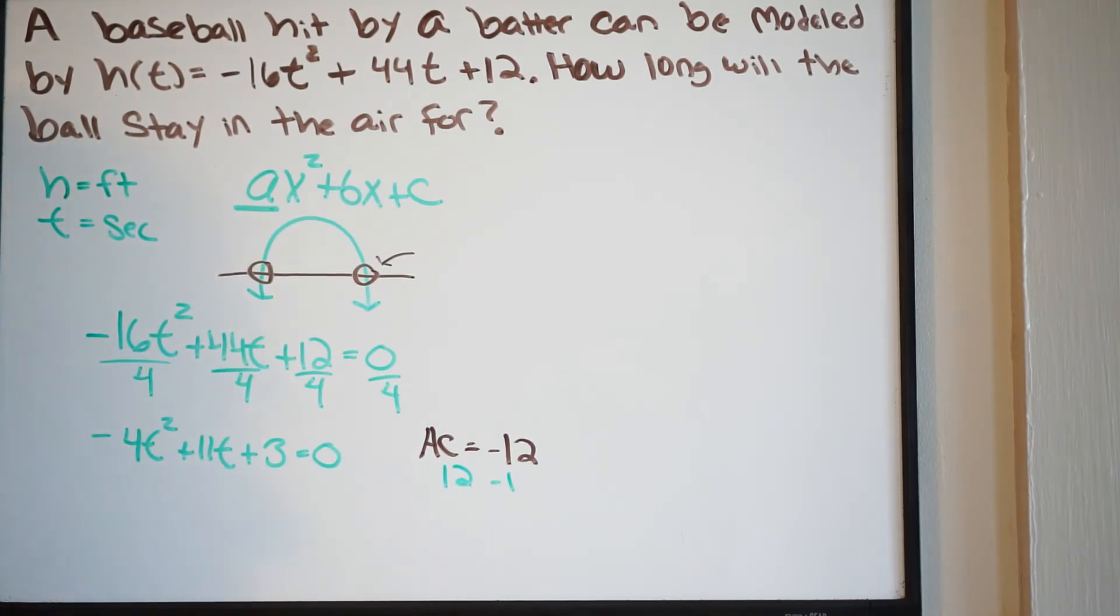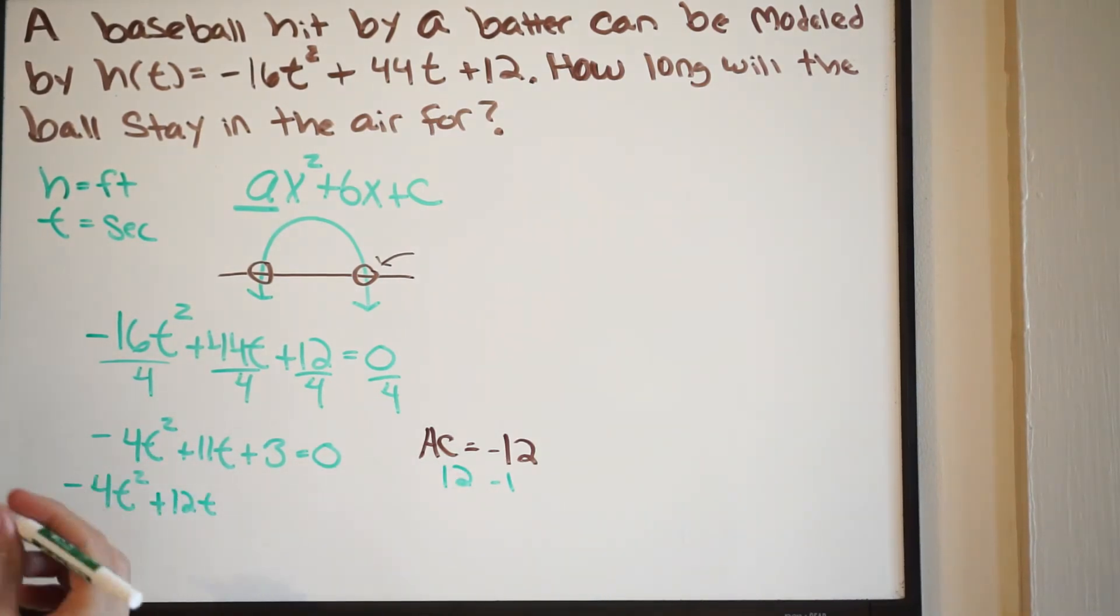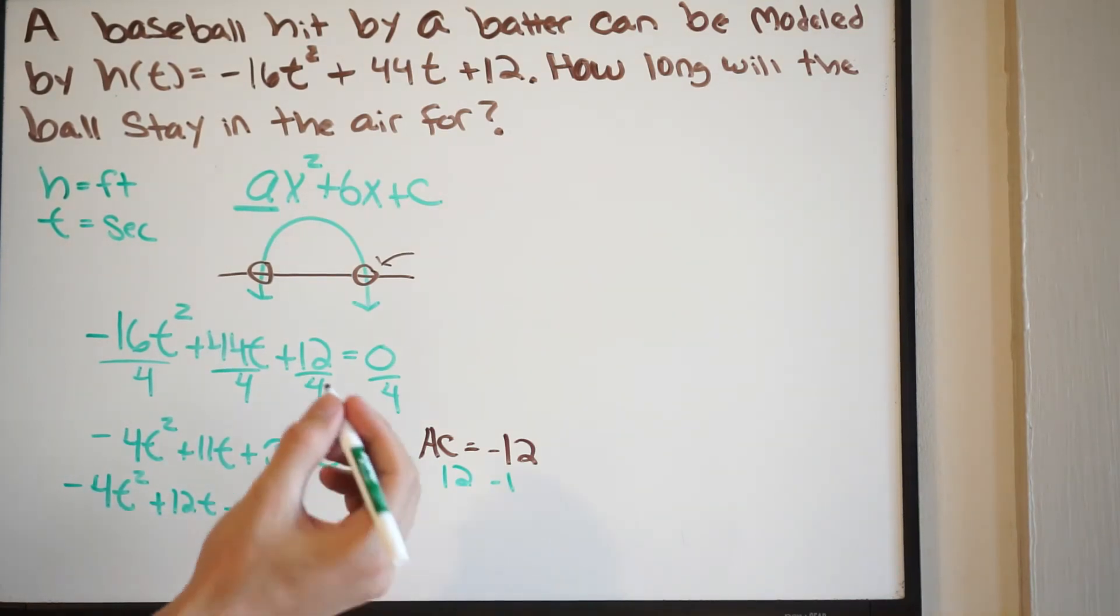Now, again, going back to the AC method when factoring, notice that A is not equal to 1 here, meaning we have to factor by grouping. So this is the problem where we have to take it a step further. So what I'm going to do is rewrite this as negative 4t squared. And then I'm just going to grab both of my values. It doesn't matter which one you grab first. You can write it in any order. I'll just grab 12. So I'm going to write plus 12t. And then the negative 1, which is just going to be negative 1t or negative t. And then plus 3, equal to 0. So notice here that we essentially just rewrote this term right here as 12t minus t.